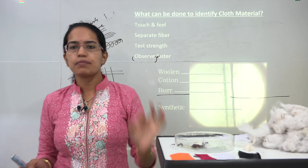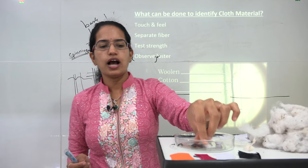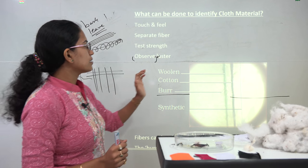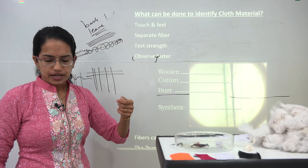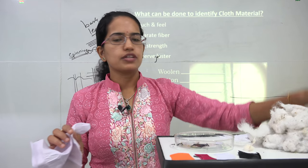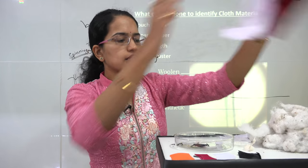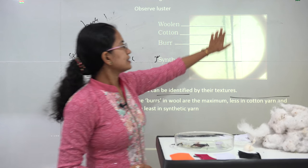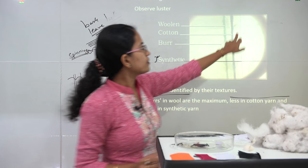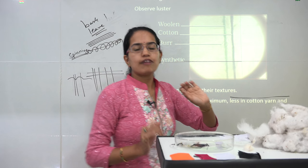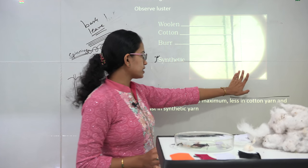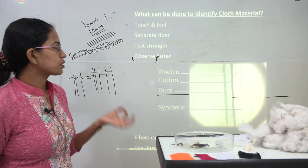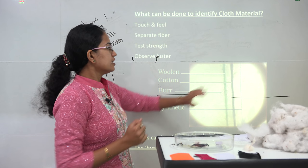Now, how do we identify a cloth material? One basic way to discriminate between synthetic and natural fiber is burning: a synthetic fiber turns into a solid hard ball, while a natural fiber breaks down into ashes. Another criterion is texture: silk is very smooth, while cotton has more burrs compared to silk. Wool has the maximum burrs, cotton yarn has fewer, and synthetic yarn has the least. That's one way to identify the cloth type.